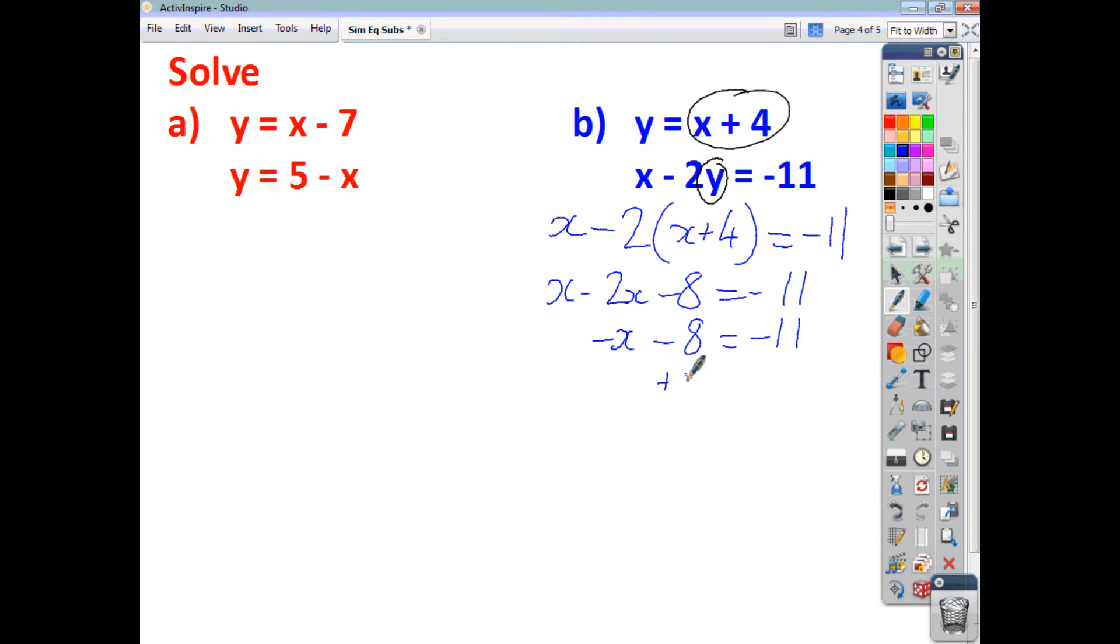And if I add 8 to both sides, we end up with negative x is equal to negative 3. Multiply both sides by negative 1, you get that positive x is positive 3. And now that you know what x is, you can then just use this equation here to find out what y is, because you know that y is x plus 4. So y is just going to be 3 plus 4, which is 7. So make sure that both your solutions are explicitly stated and underlined, and that's how you use the technique of substitution to solve simultaneous equations.